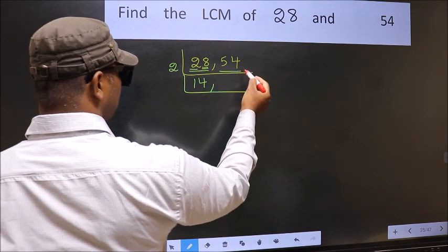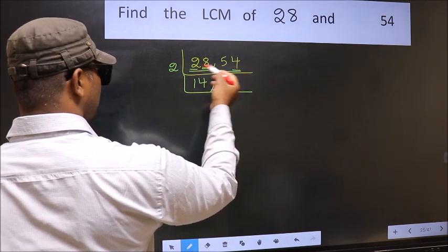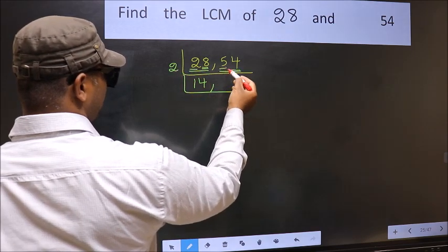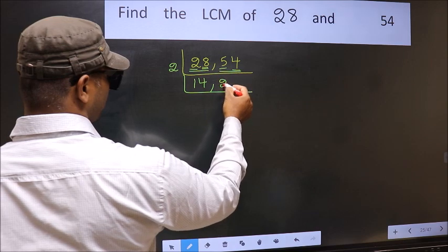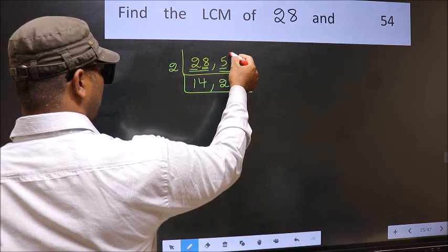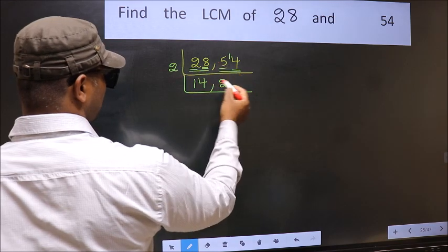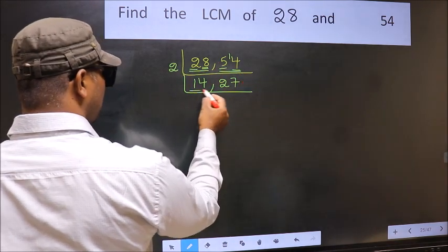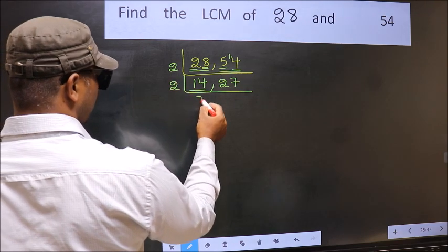Now the other number is 54. Last digit 4, so this is divisible by 2. First number 5 — a number close to 5 in the 2 table is 2 times 2 is 4. 5 minus 4 is 1, carried forward gives 14. When do we get 14 in the 2 table? 2 times 7 is 14. So here we have 14, and 2 times 7 is 14.